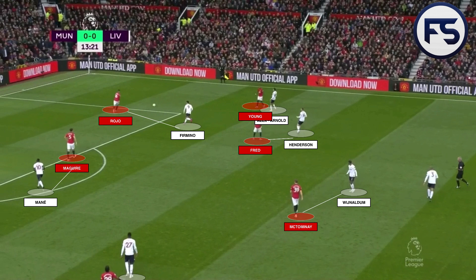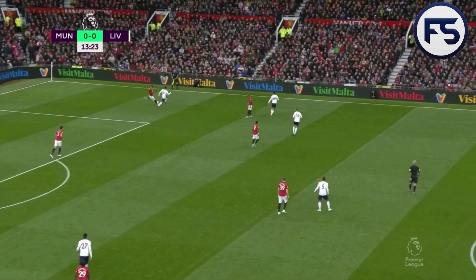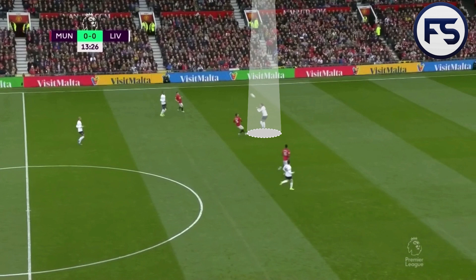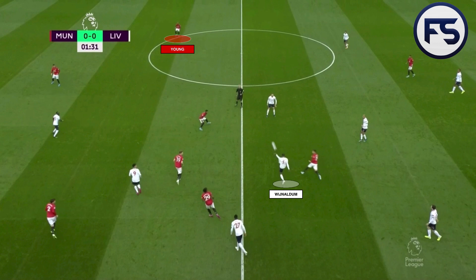Ten minutes later, almost exactly the same — Mané and Firmino on opposite sides, but the idea is the same: each player one-against-one with their opposite number. It's difficult for United to play out so they have to go long, and with three forwards up front it's important that Van Dijk wins that ball to prevent a Manchester United counter-attack. Manchester United looked to play the ball over the top to Rashford and James, trying for a two-against-two with the Liverpool centre-backs.